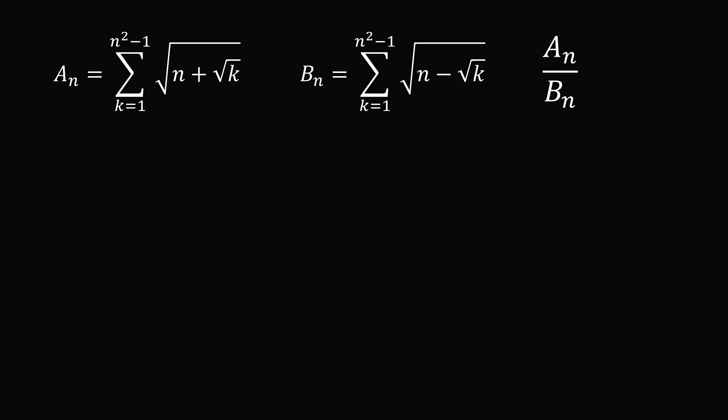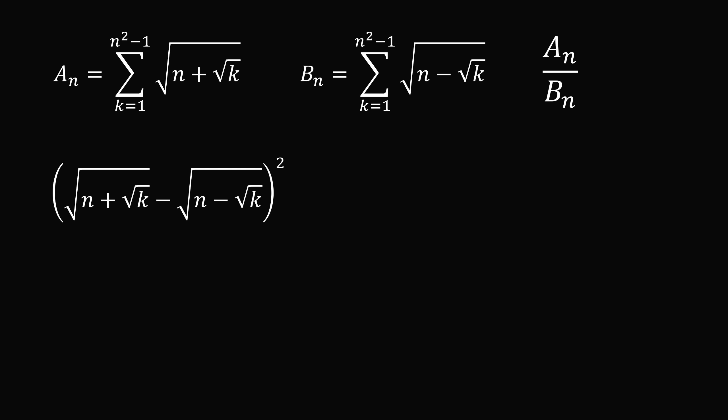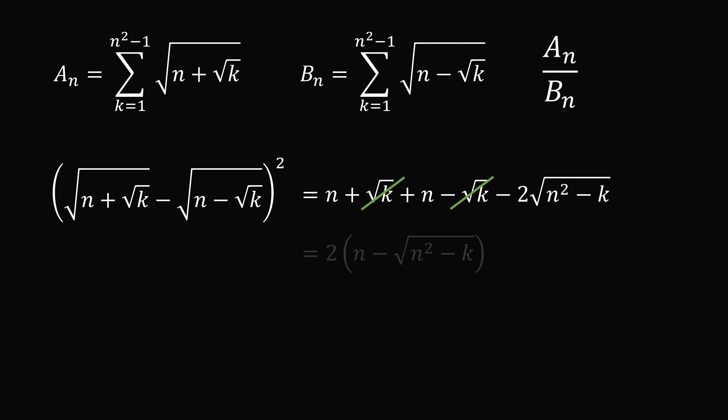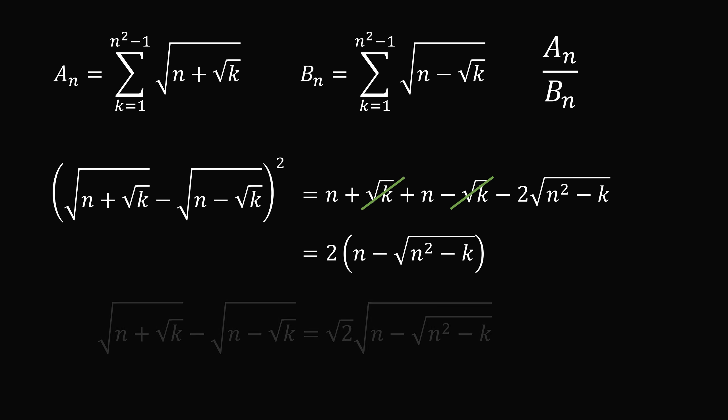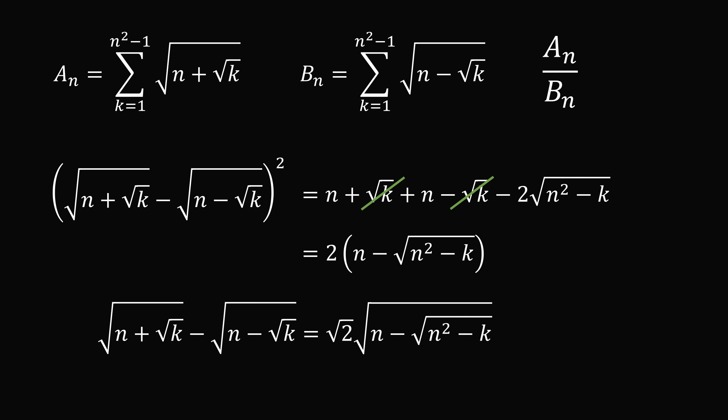Whenever there are nested square roots, it's a good idea to take the square of the terms. So let's take the square root of n plus the square root of k minus the square root of n minus the square root of k. We'll take this difference and square it, expanding the binomial, which gets rid of some of the square roots. The plus square root of k cancels with negative square root of k. We then have 2n minus 2 times the square root of n squared minus k. We can now take the square root of both sides: the square root of n plus the square root of k minus the square root of n minus the square root of k equals the square root of 2 multiplied by the square root of the quantity n minus the square root of n squared minus k.